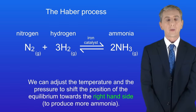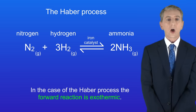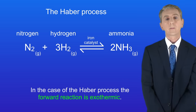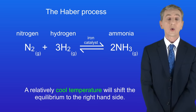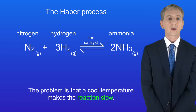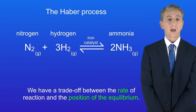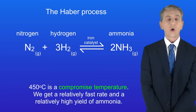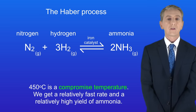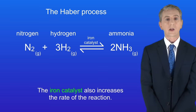We can adjust the temperature and pressure to shift the position of the equilibrium towards the right-hand side — in other words, to produce more ammonia. The forward reaction in the Haber process is exothermic, which means a relatively cool temperature will shift the equilibrium to the right. However, a cool temperature makes the reaction slow, so there's a trade-off between the rate of reaction and the position of the equilibrium. That means 450 degrees Celsius is a compromised temperature: we get a relatively fast rate and a relatively high yield of ammonia. The iron catalyst also increases the rate of the reaction.